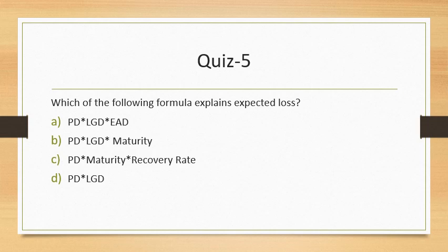Question 5: Which formula explains expected loss? The correct answer is PD × LGD × EAD. We take three factors into consideration: probability of default, loss given default, and exposure at default. Probability of default ranges from 0 to 1 (0% to 100%). Loss given default is also a percentage — if 100%, everything is lost. EAD is an amount value, not a percentage — it represents exposure at default.